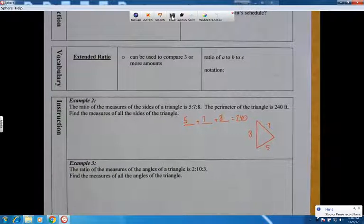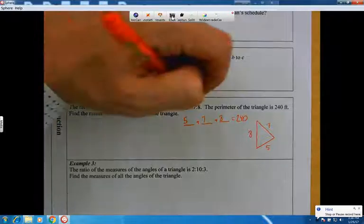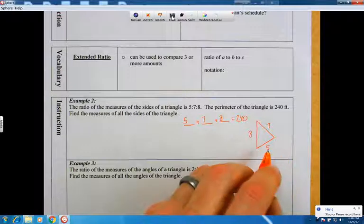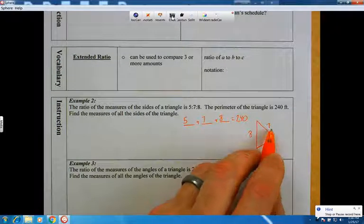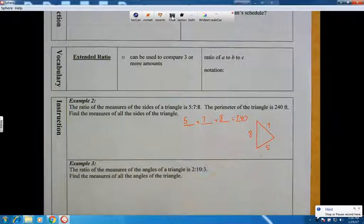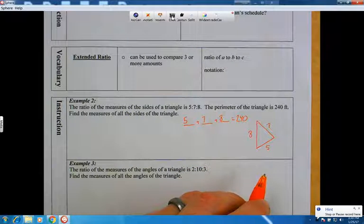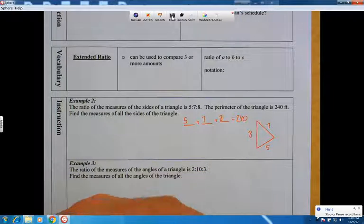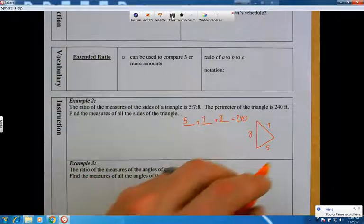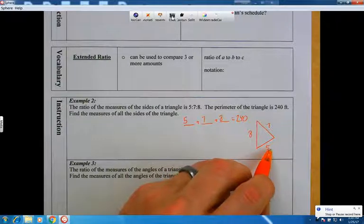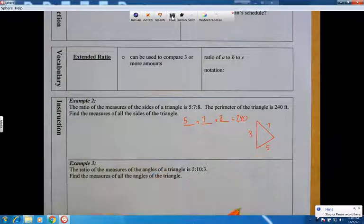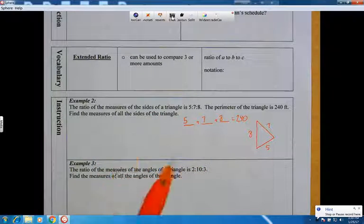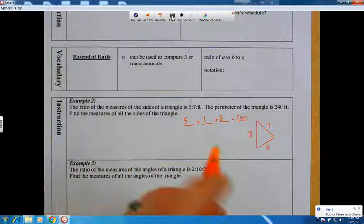And the thing that we need to keep in mind is that when it said that the ratio of the sides was 5 to 7 to 8, it didn't mean that the side was 5 long, 7 long, and 8 long. It meant that these sides were proportional, which means there's basically some number that we could times the 5, the 7, the 8 by. And if we took that number and timesed it by each one of these, it would kind of blow it up and make that number larger.